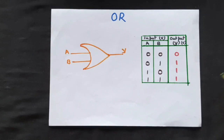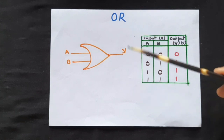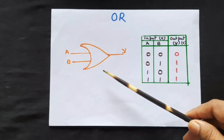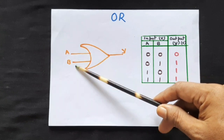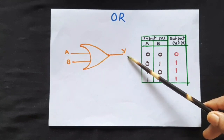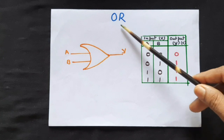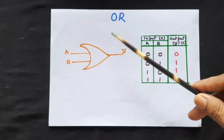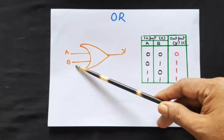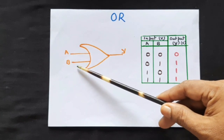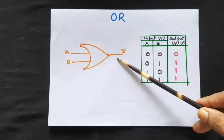The three important logic gates are OR gate, AND gate, and NOT gate. First we will discuss about OR gate. This is the symbol for OR gate. Here A and B are the two inputs to the OR gate and Y is the output. As the term OR indicates, if this input or this input is high, then your output will be high.